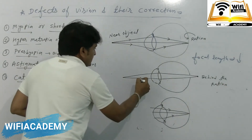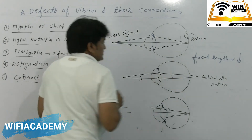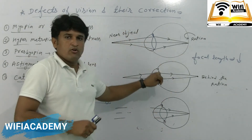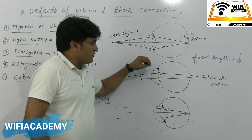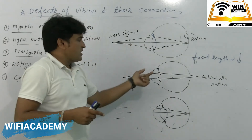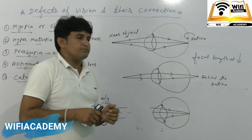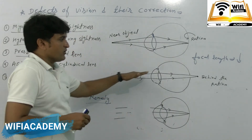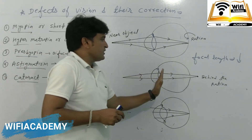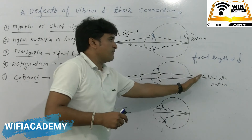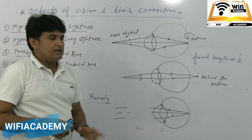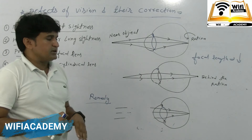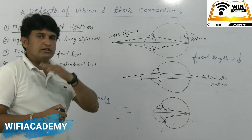In this condition, the curvature of the eye lens decreases, so the focal length increases and the converging power decreases. Because the power is decreased, the image is formed behind the retina.